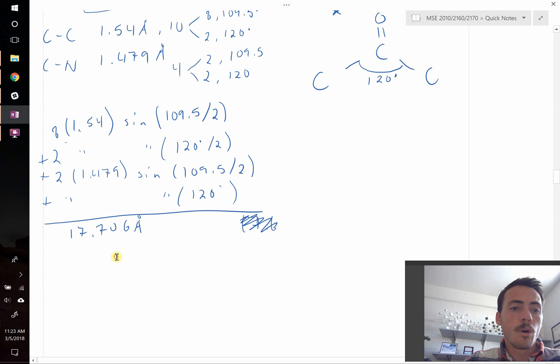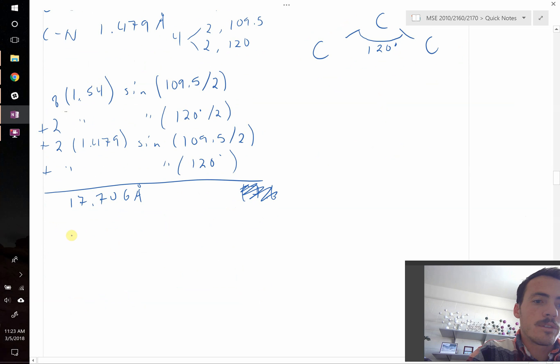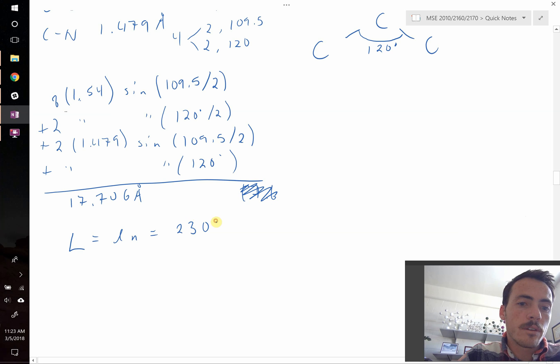So what about the total length of the entire polymer? Well, the total length, let's call that capital L, that's going to be equal to small n, each mer length multiplied by the total number of those, which is 1,300. Plug that all in and you get a value of 23,017 angstroms. Now, remember that an angstrom is the same thing as times 10 to the negative 10 meters, right?